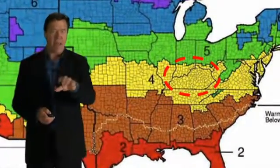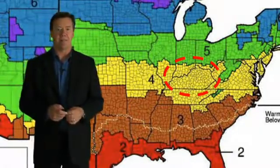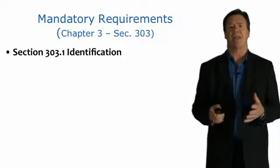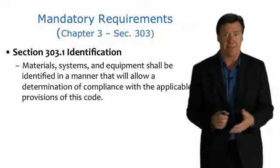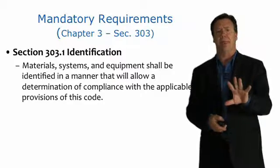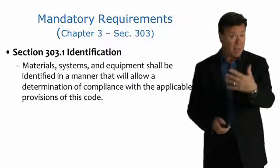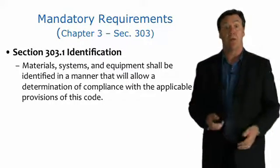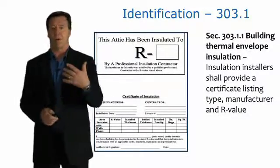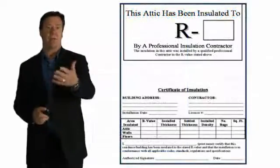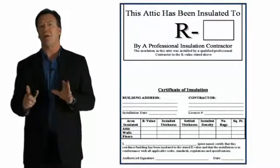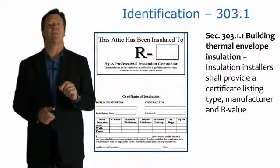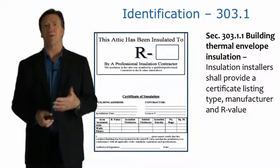The first section with regards to mandatory requirements is identification. Materials, systems, and equipment shall be identified in a manner that will allow determination of compliance with the applicable division of the code. The code official needs to go into a building and look at the insulation, for example, and make sure it's adequately identified or marked so he knows it meets compliance for his particular geographic area. One of the areas we're looking at is the insulation certificate. For an attic, for example, it lists the type of insulation, the manufacturer, and its R-value.